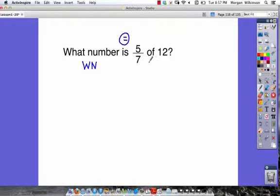And of, of course, means to multiply. So if we know those things, we can write out an equation. What number WN equals 5 7ths times 12 over 1.